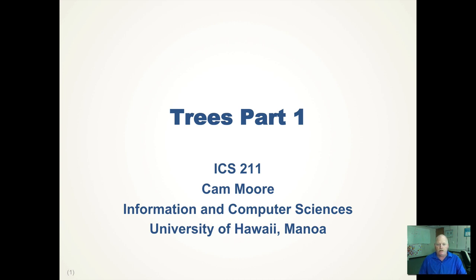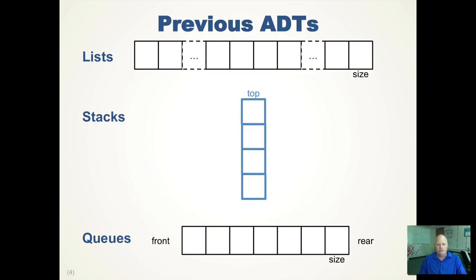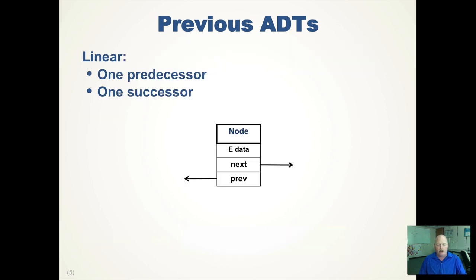Welcome to the first screencast on Trees, our next abstract data type. Previously we've talked about lists, stacks, and queues. They are all linear abstract data types in that each node or each item in the abstract data type has one predecessor and one successor. Even with a singly linked node, there is a predecessor and only one successor. So that's a linear abstract data type.